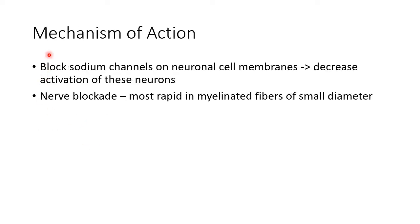Now let us see about the mechanism of action of local anaesthetics. Local anaesthetics block sodium channels on neuronal cell membranes. This leads to decreased activation of these neurons leading to nerve blockade. The nerve blockade is most rapid in myelinated fibers of small diameter.